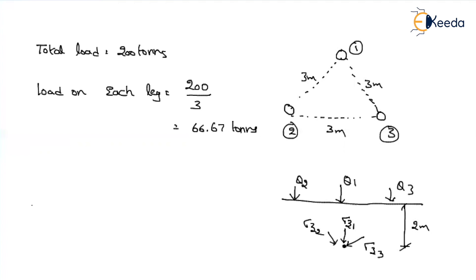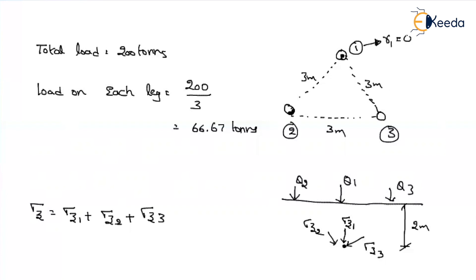The total stress at that point will be due to three loads — stress because of leg 1, plus stress because of leg 2, plus stress because of leg 3. We have to find the stress below any one leg, let us say below leg 1. My load on leg 1 and my stress point are acting on the same line, so for pile 1 the radial distance r will be equal to 0, because the load and the stress point are both on the same vertical line.